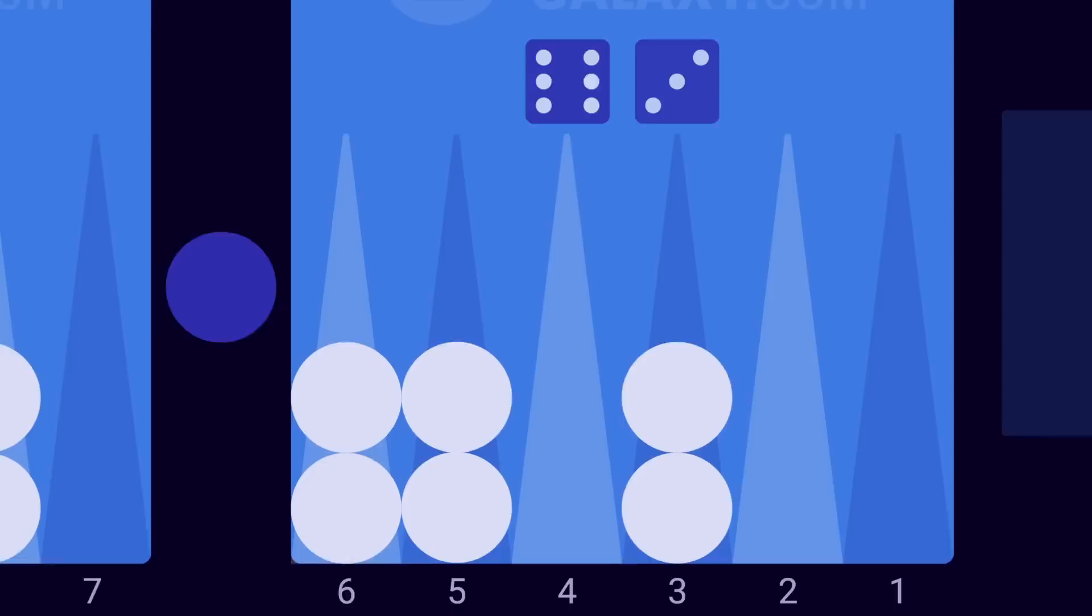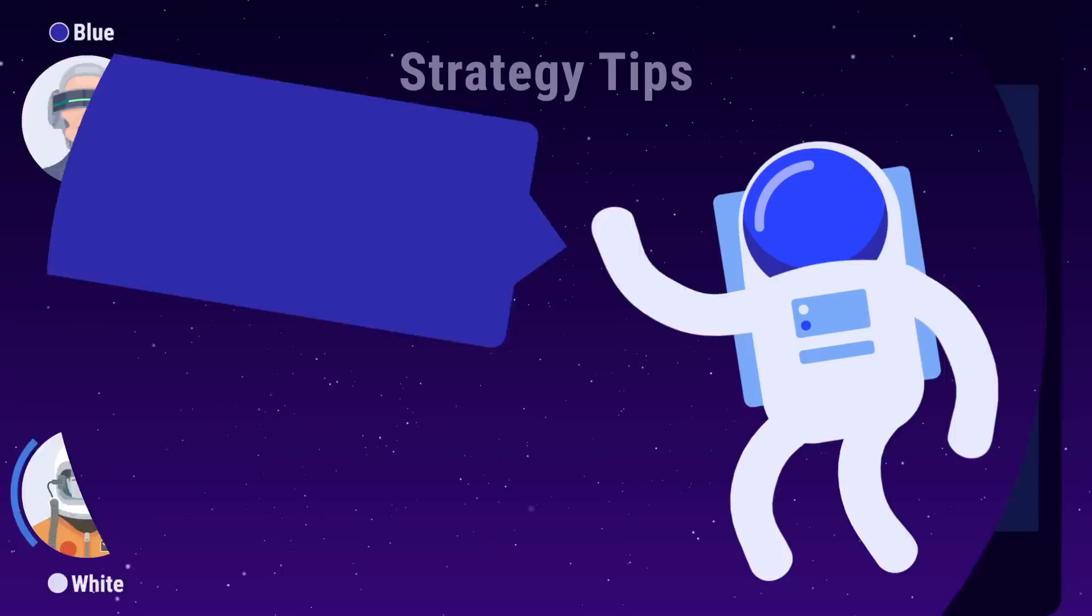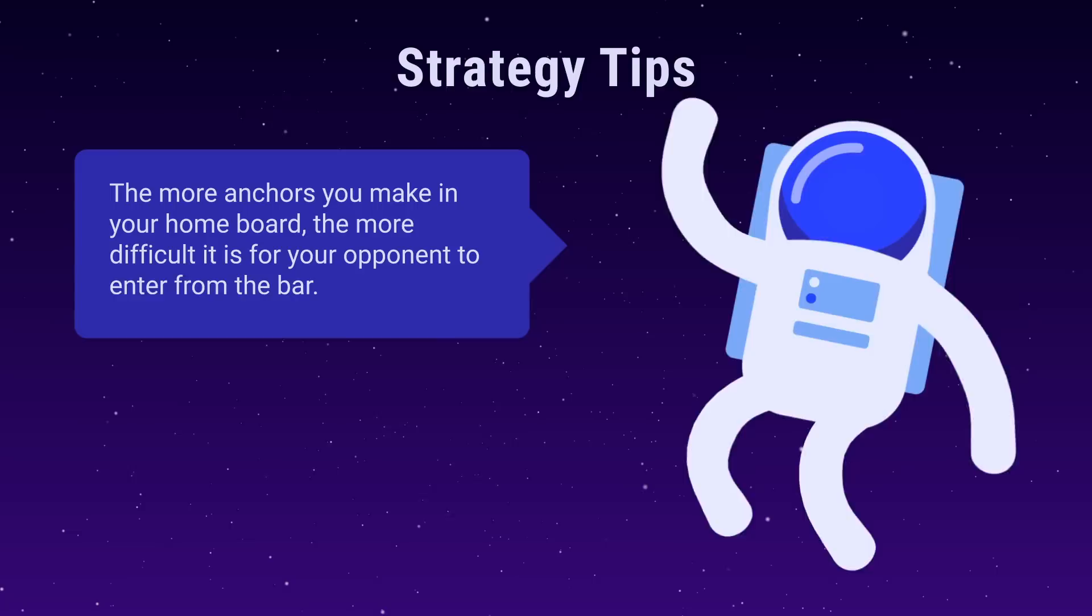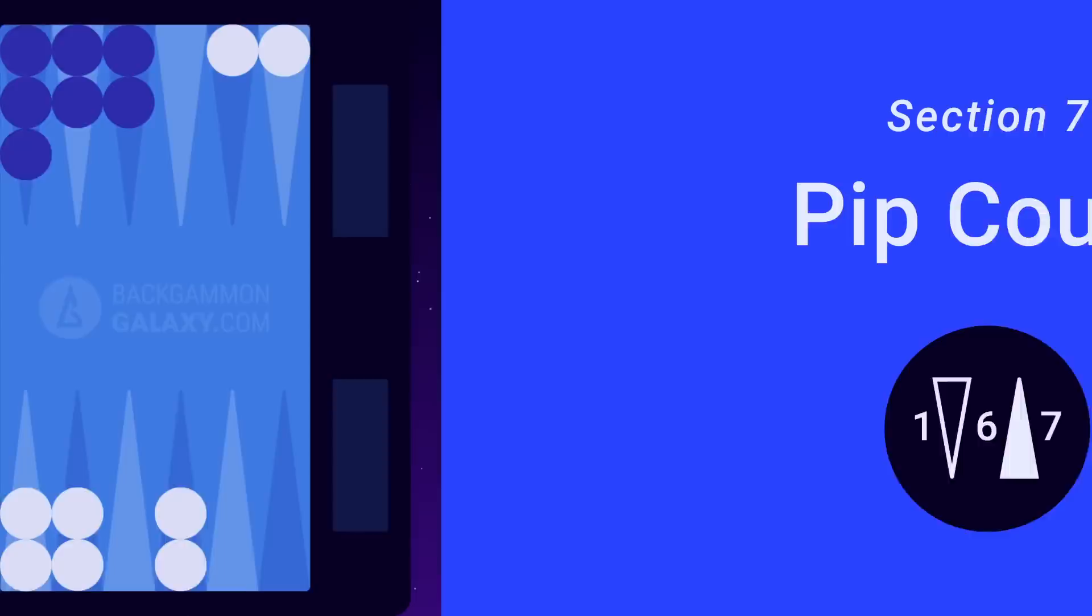If blue rolled 6-3 and was unable to enter, often referred to as dancing, it would automatically end her turn. The more anchors you make in your home board, the more difficult it is for your opponent to enter from the bar. The closer to home a checker is, the longer it has to travel if it's hit. Okay, let's take a break and talk about pips.